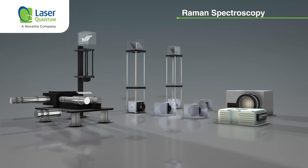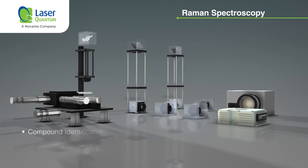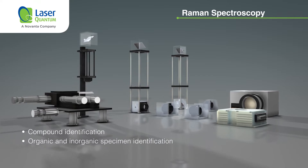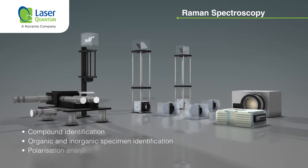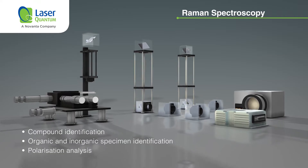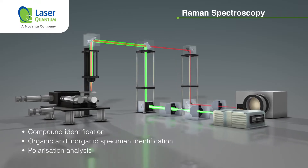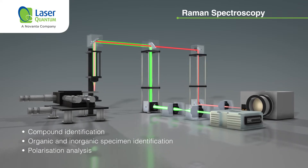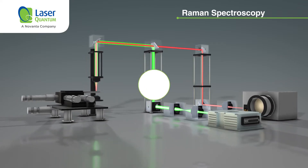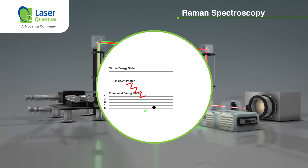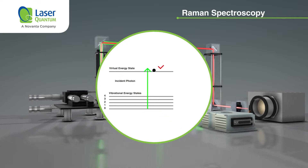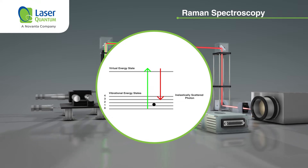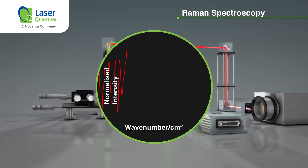Raman spectroscopy is a powerful technique for compound identification — both organic and inorganic specimen identification — and polarization analysis, using either a fiber-coupled or free-space laser. The photons interact with molecular vibrations in a sample, resulting in a frequency shift in the scattered light, which can be measured by a detector. The resulting spectrum provides a chemical fingerprint of a sample.